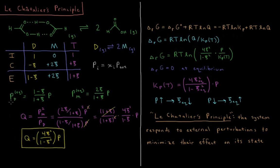The partial pressure of a given quantity in a mixture of gases equals its mole fraction times the total pressure. The partial pressure of the dimer is its mole fraction — (one minus C) over (one plus C) — times the total pressure P. The partial pressure of the monomer is (two C) over (one plus C) times P.